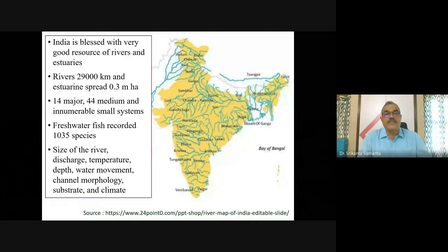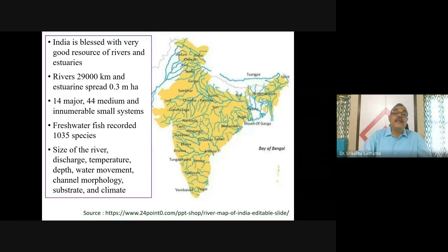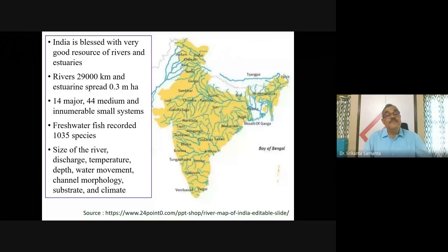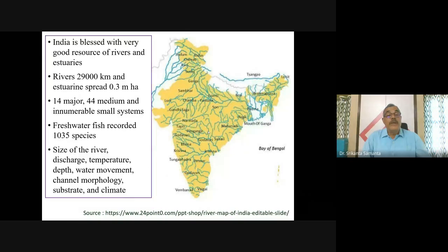India is blessed with very good resources of rivers and estuaries. As seen from the map, the entire country is criss-crossed with rivers — 14 major rivers, 44 medium rivers, and an innumerable number of small systems. The riverine resource is estimated at 29,000 km in earlier literature, and even 45,000 km in some recent literature. The estuarine spread is around 0.3 million hectares. With respect to fisheries biodiversity, 1,035 species have been recorded from the freshwater part. Fish diversity depends upon river size, discharge, temperature, depth, water movement, channel morphology, substrate condition, and climate.